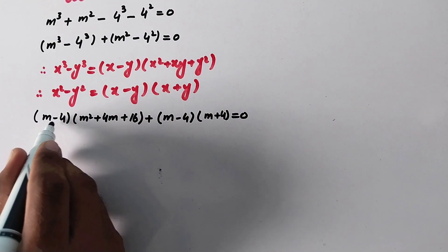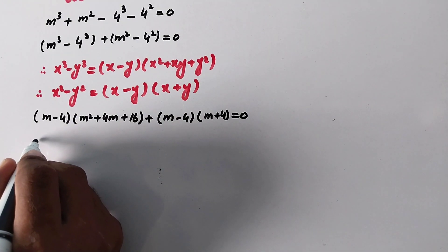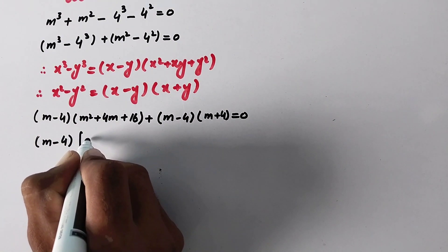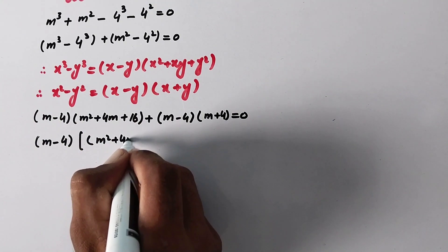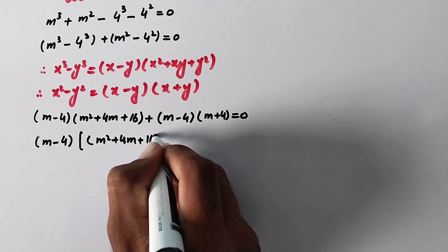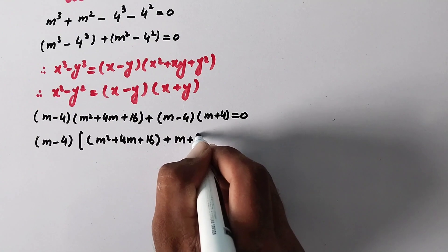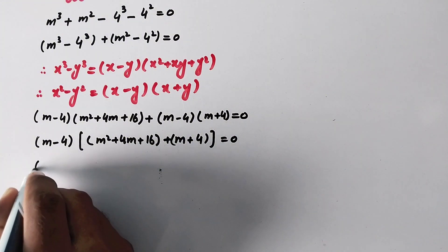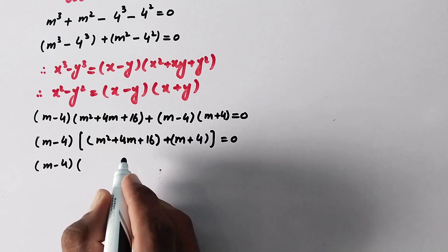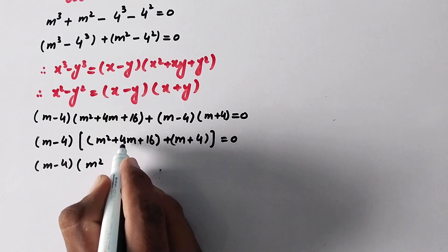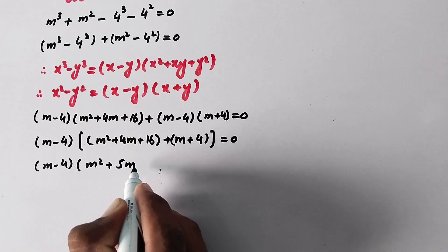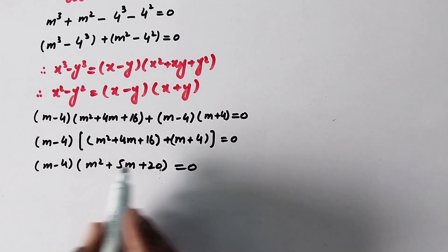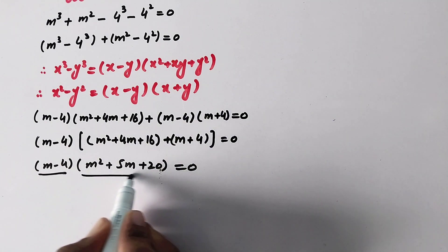Now we can see that we can take m minus 4 as common from the whole expression. So we will write m minus 4, bracket m squared plus 4m plus 16 plus m plus 4, is equal to 0. Simplifying inside the bracket: m squared plus 5m plus 20 equals 0.